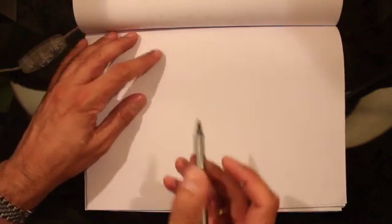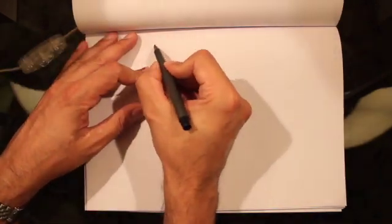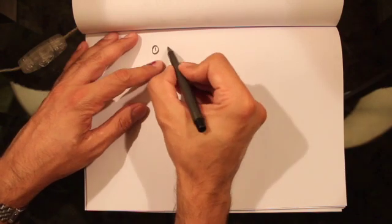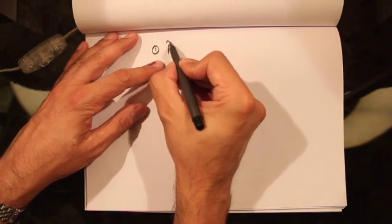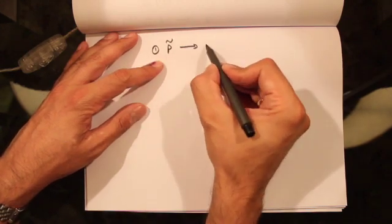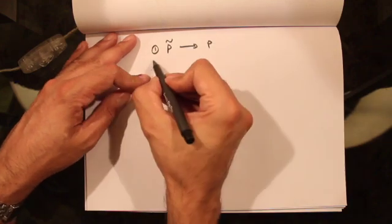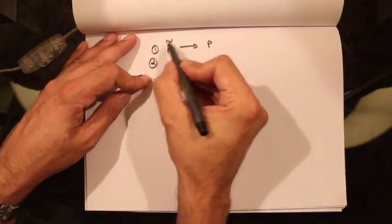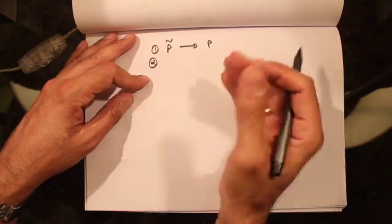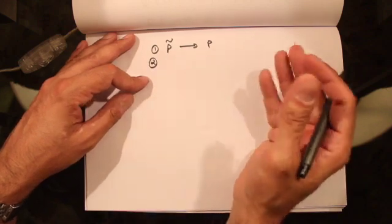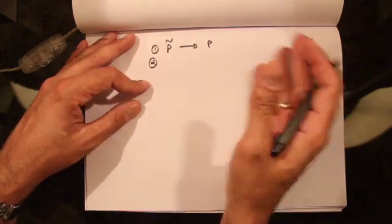Hi guys, so in the previous lecture we saw what it means to have a risk-neutral probability measure. The two requirements were: requirement number one, the risk-neutral probability measure needs to be equivalent to the actual probability measure. Secondly, under this risk-neutral probability measure, the discounted value of the stock needs to be a martingale.